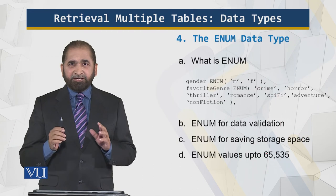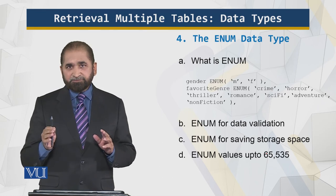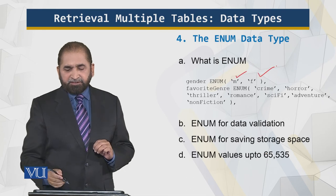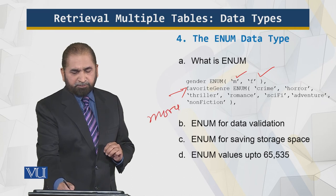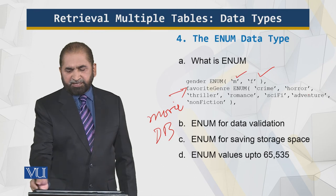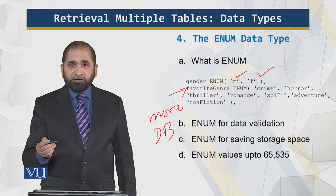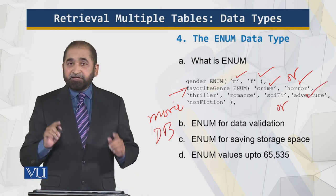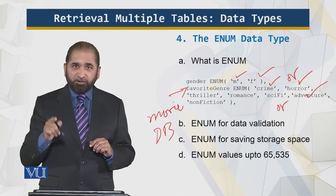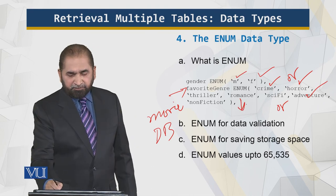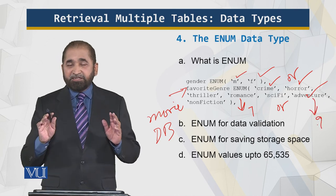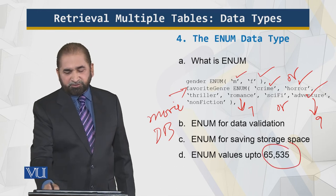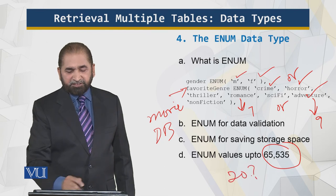The enum data type allows a variety of predefined values, and only among those values can a selection be made. For example, gender can be either male or female; a favorite genre can be romantic, science fiction, and so on. The benefit of enum is data validation — only a listed value can be selected, no other value is allowed. It also saves space: instead of storing 'horror' or 'thriller' as text, a number like 7 or 9 is stored. Theoretically up to 65,000 enum values are supported, but after about 20 values it becomes unwieldy.